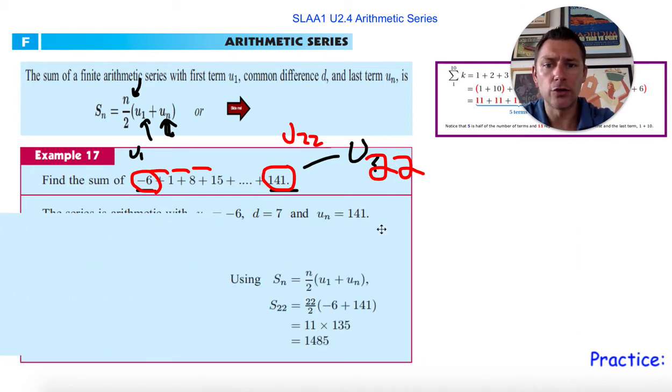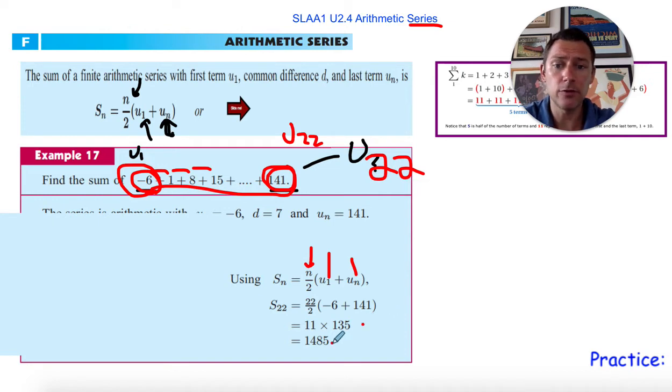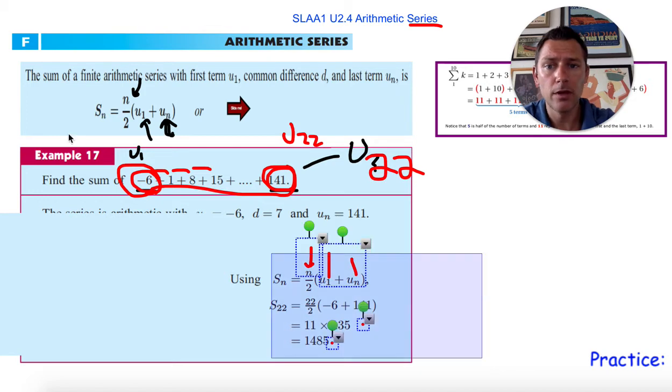Once we've got that, now we can use the formula for the series. Series is summing them up and say, oh, if I have 22, I can put in 22 for my N there. Putting U1, UN. And if I have 22 items in my list, I have 11 packets and each packet is this plus this in size. Then we can multiply those two. It's 1485.